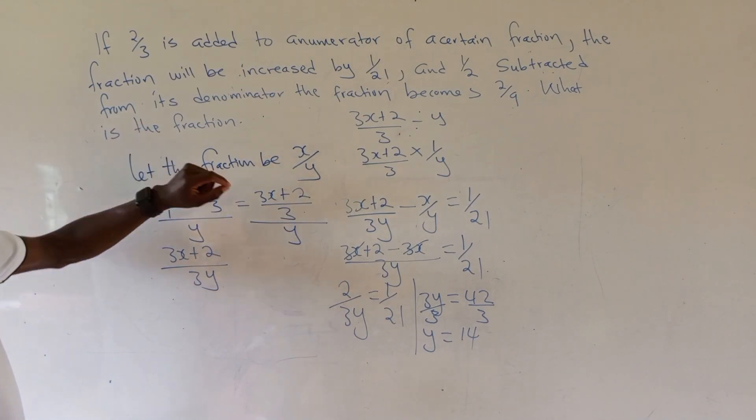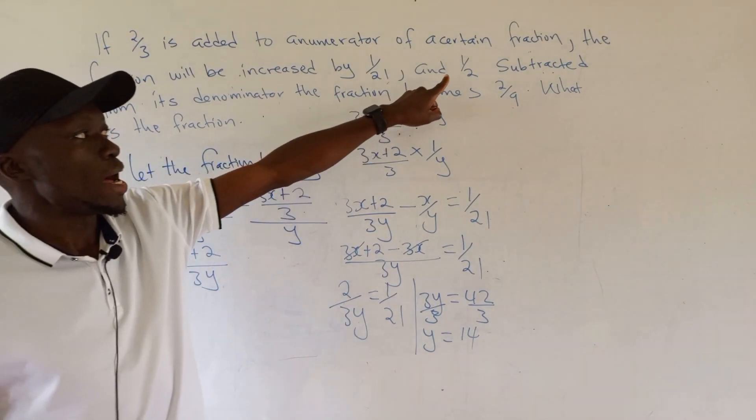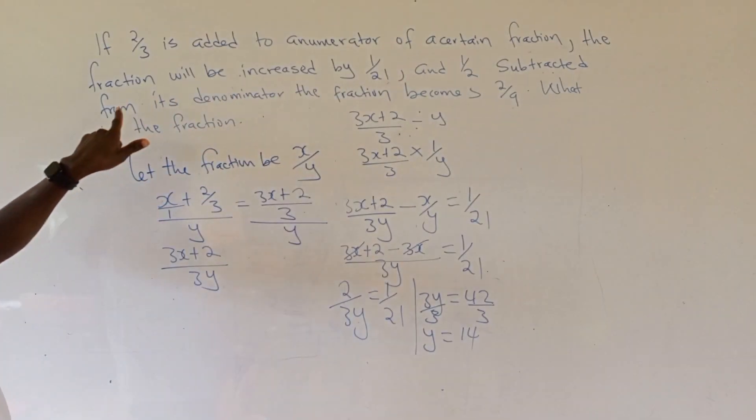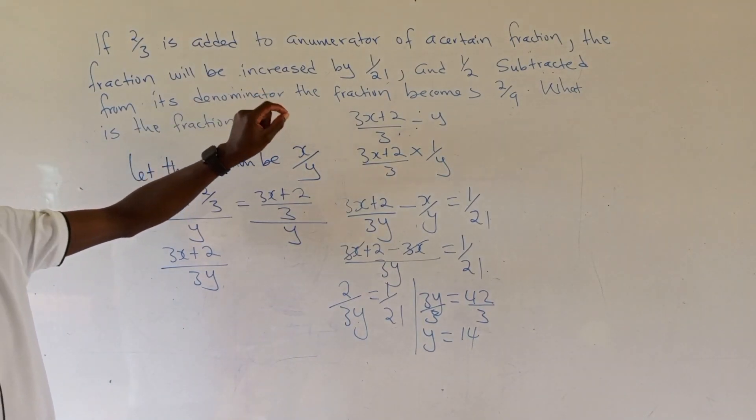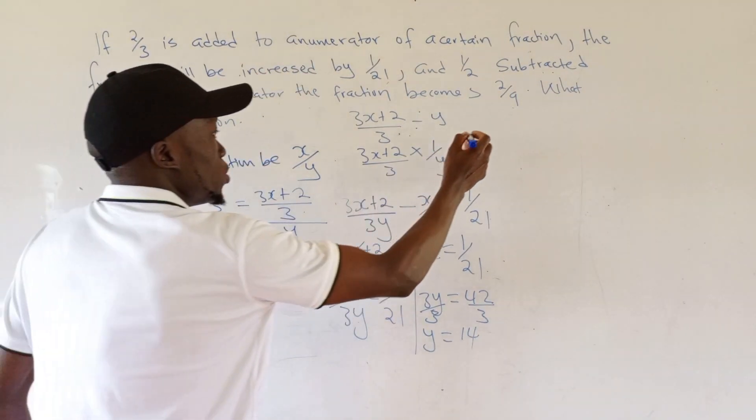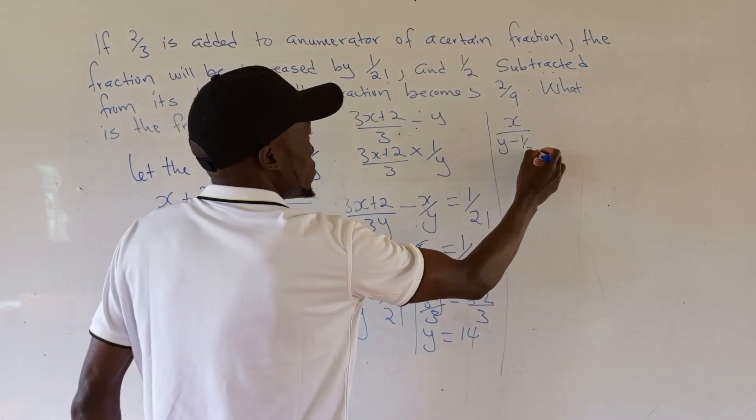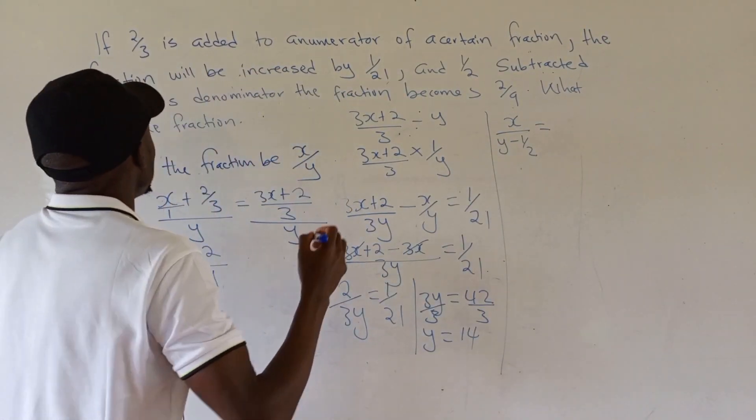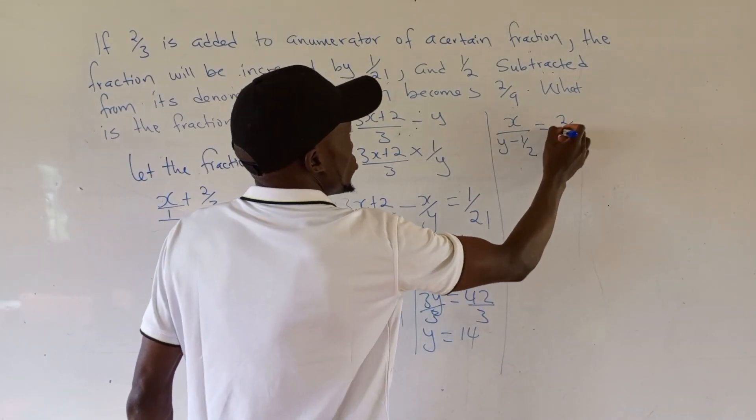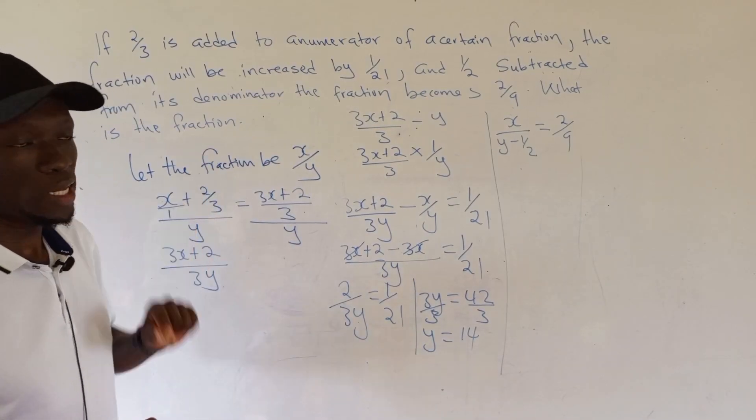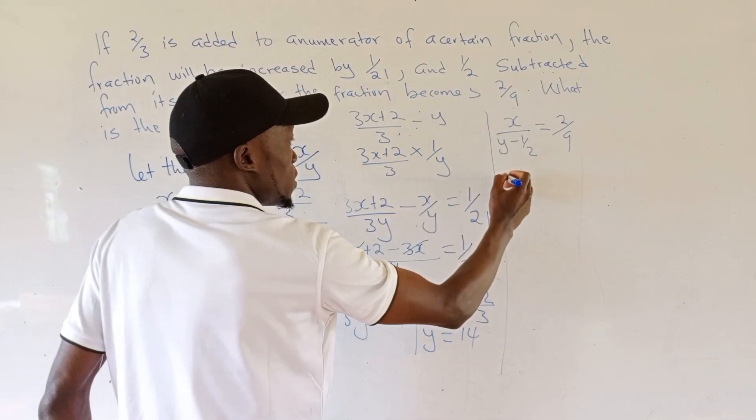Now the second part. When 1/2 is subtracted from its denominator, the fraction becomes 2/9. So x/(y - 1/2) = 2/9.